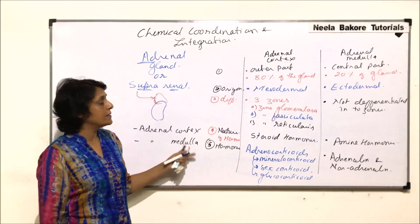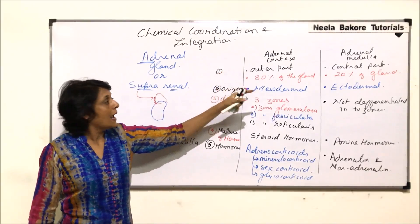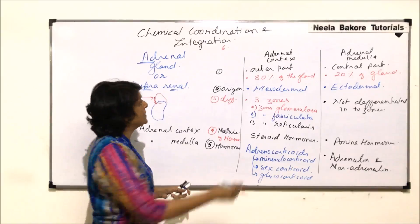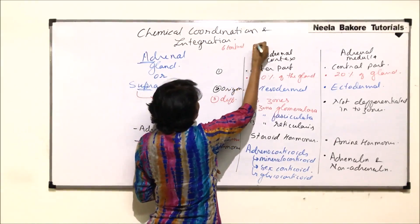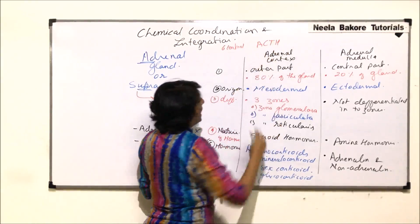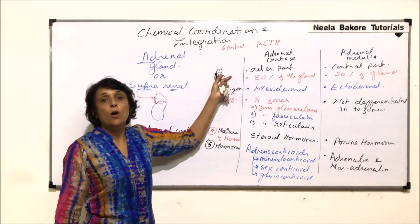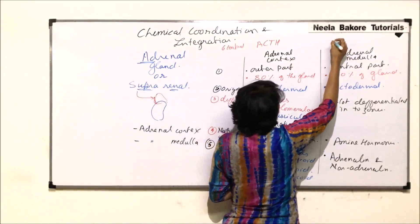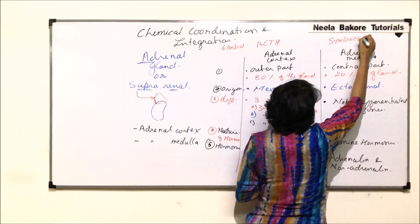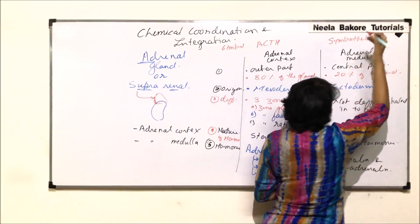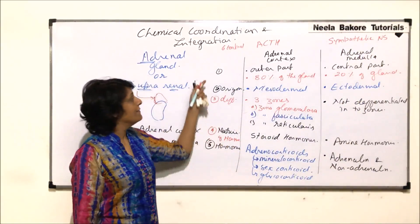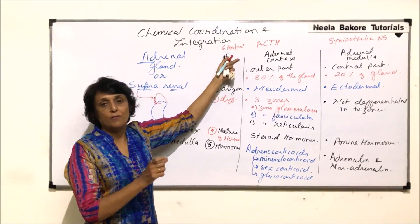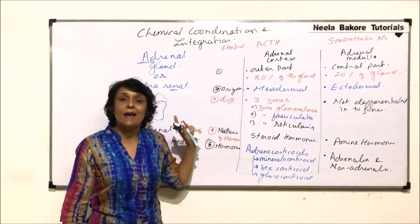The sixth point is control. The adrenal cortex is under the control of ACTH — adrenocorticotropic hormone — which is a hormone secreted by the pituitary gland. The adrenal medulla, on the other hand, is under the control of the sympathetic nervous system.